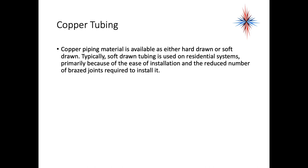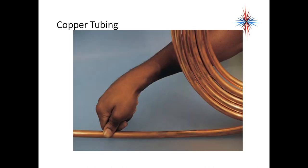Copper piping material is available as either hard drawn or soft drawn. Typically, soft drawn tubing is used on most residential systems, primarily because of the ease of installation and the reduced number of brazed or soldered joints required. Remember, every time you put a joint in, every time you put a fitting in, you have a chance for a leak. This is an example of copper tubing—this is how you can actually bend out copper tubing.